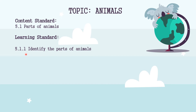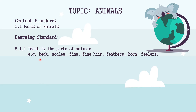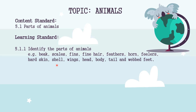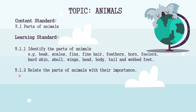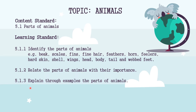Our learning standard is 5.1.1: identify the parts of animals. Examples include beak, scales, fin, fine hair, feathers, horn, feelers, hard skin, shell, wings, head, body, tail, and webbed feet. Standard 5.1.2: relate the parts of animals with their importance. Standard 5.1.3: explain through examples the parts of animals.